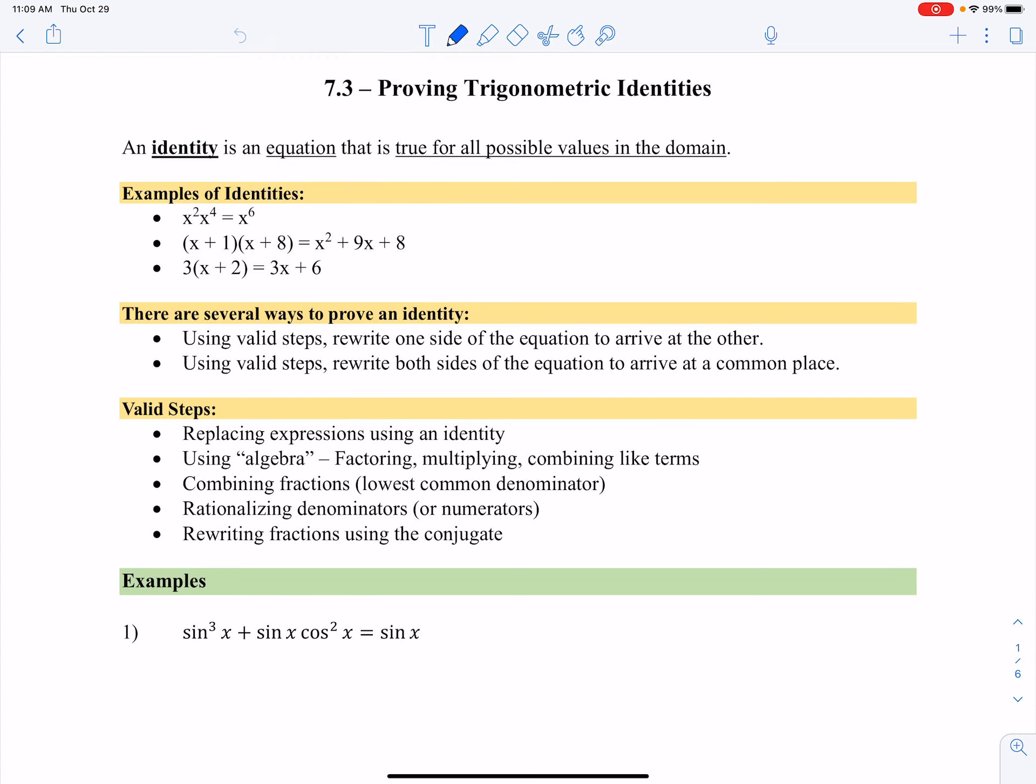We're going to get into proving trigonometric identities, and the idea of an identity is really not that foreign to us if you think back to your algebra experience. For example, we know that by property of exponents, x² times x⁴ equals x⁶. Those two expressions are equal for all values of x that are possible, so that is an example of an identity.